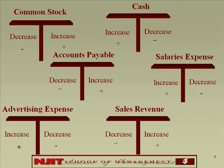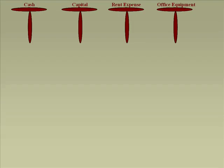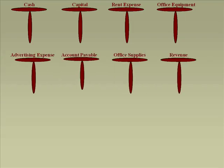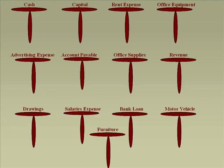Look at the screen in front of you. I want you to open T accounts for cash, capital, rent expense, and office equipment. Then open T accounts for advertising expense, accounts payable, office supplies, and revenue. Then open T accounts for drawings, salaries expense, bank loan, motor vehicle, and furniture.